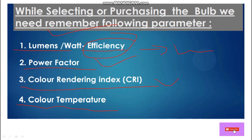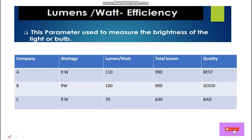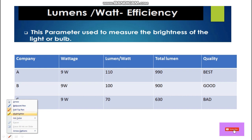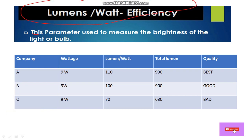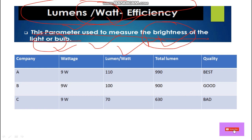Now coming to the first parameter — lumens per watt, which means efficiency. This parameter is used to measure the brightness of the light or bulb. On this parameter we can judge how much brightness this bulb or light can give.